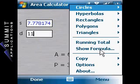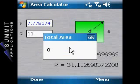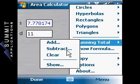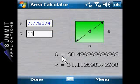To subtract the area from the total, select Subtract. To clear the running total, select Clear. Other shapes work the same way.